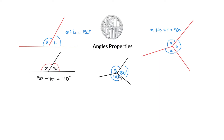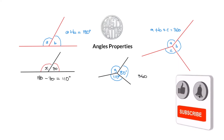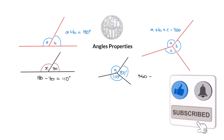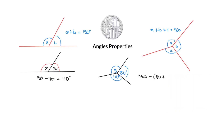Now let's try this question. I want to find angle y, and they've given me a couple of angles already. Because this is around a point and forms a full circle, all of these angles should add up to 360 degrees. So to find angle y we do 360 take away the known angles, and this gives us y equals 170 degrees.